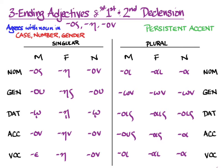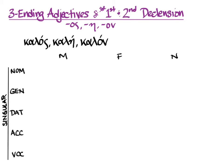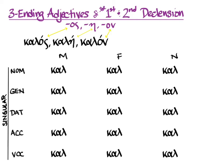Adjectives have persistent accent. Now let's see what this looks like with a real adjective. Kalos, kale, kalon means good, beautiful, or noble. You can see how these endings follow os/a/on. Right there you see that the vocabulary gives you the masculine nominative singular, the feminine nominative singular, and the neuter nominative singular. You take off that os/a/on to get your stem.